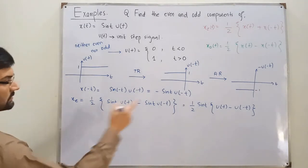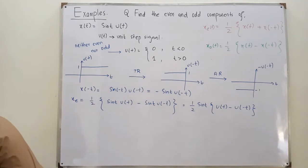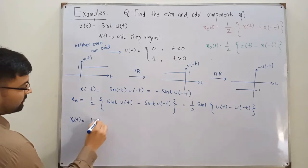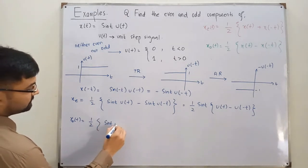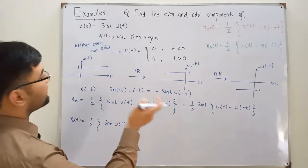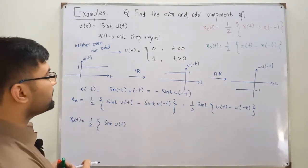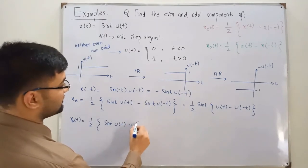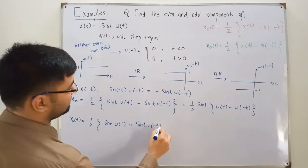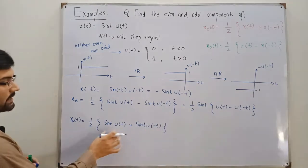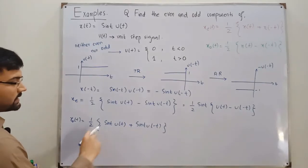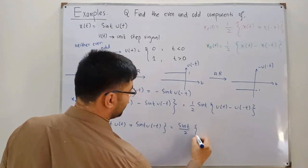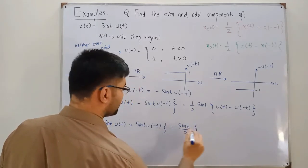For the odd component, x_o(t) equals one-half of x(t) minus x(-t), which is one-half of sine(t)·u(t) minus negative sine(t)·u(-t). Because of the double negative we add, so taking sine(t) outside we get sine(t) divided by 2, and inside the bracket we have u(t) plus u(-t).